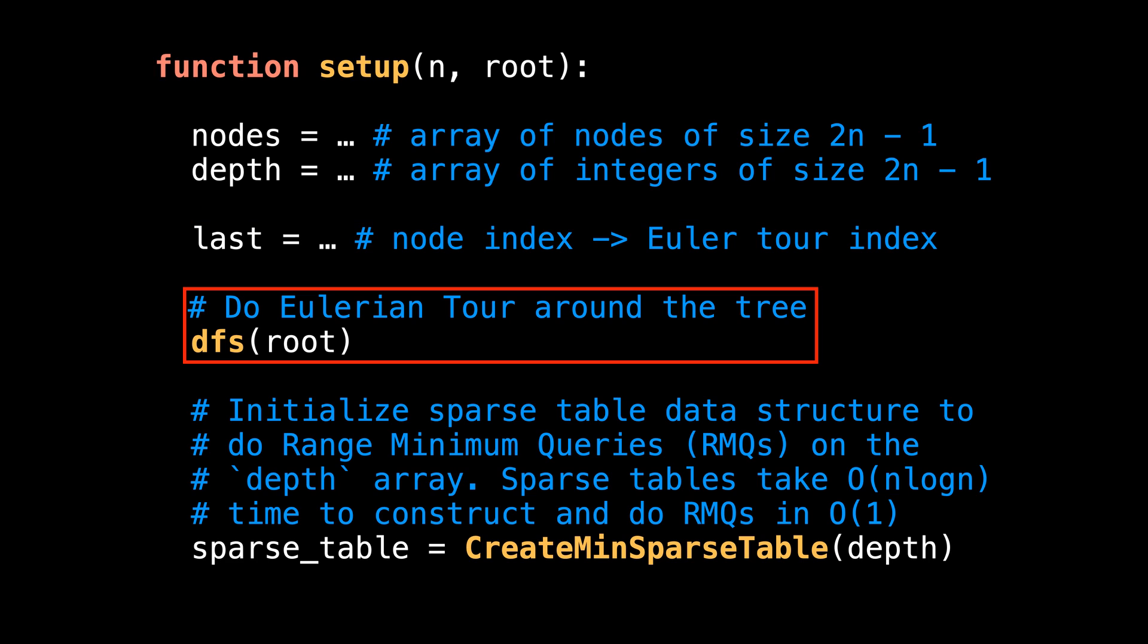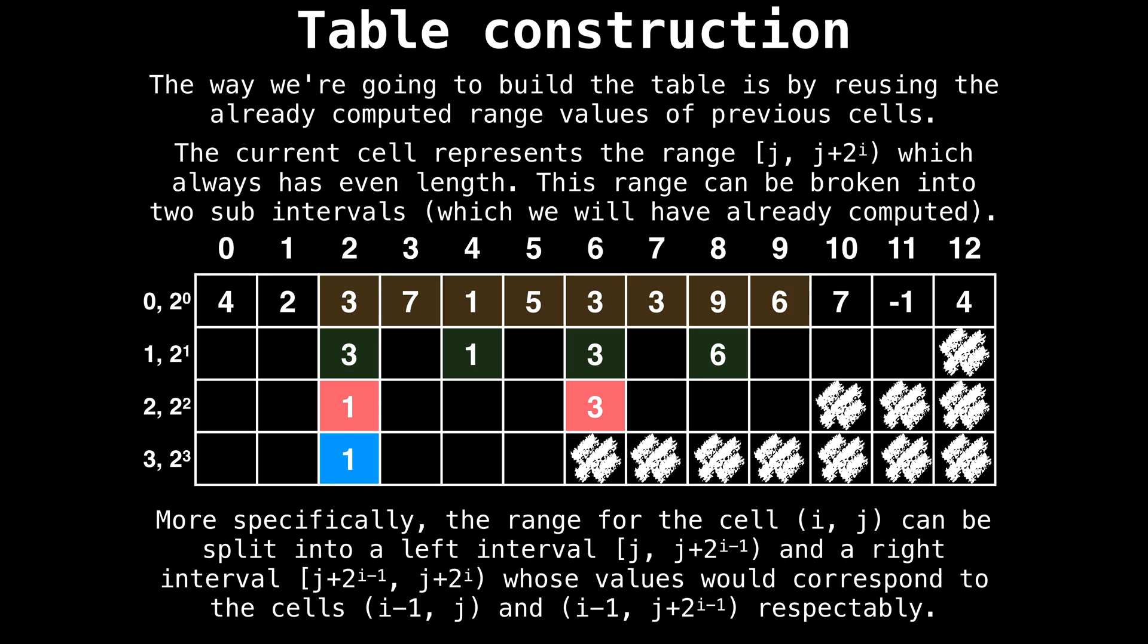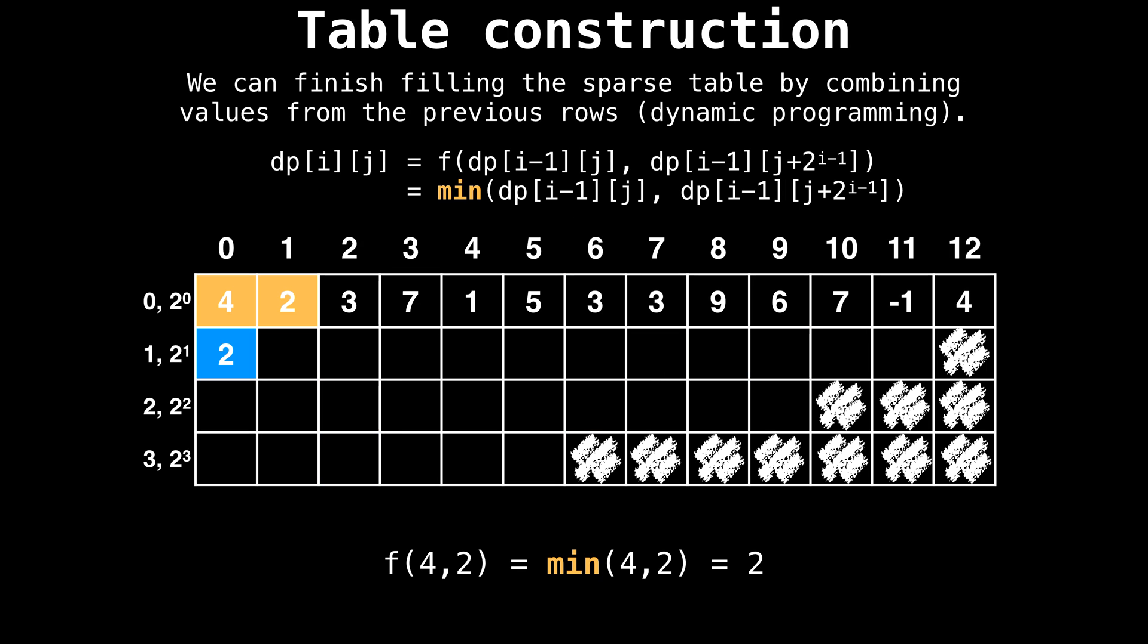Next up, we actually want to do the Eulerian tour around the tree to populate our arrays. This is handled by the depth first search method, which we will take a look at soon. And lastly, initialize a min sparse table data structure to do range minimum queries on the depth array. Sparse tables take n log n time to construct and do range minimum queries in constant time. If you want to learn more about sparse tables, consider watching my video on how to construct and query sparse tables from my data structure series.